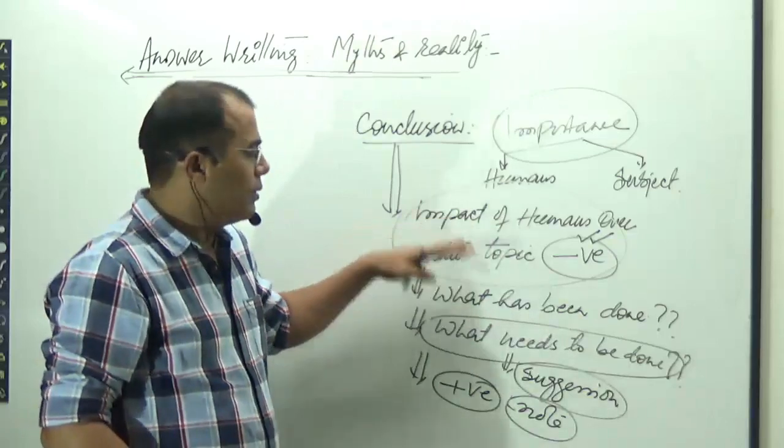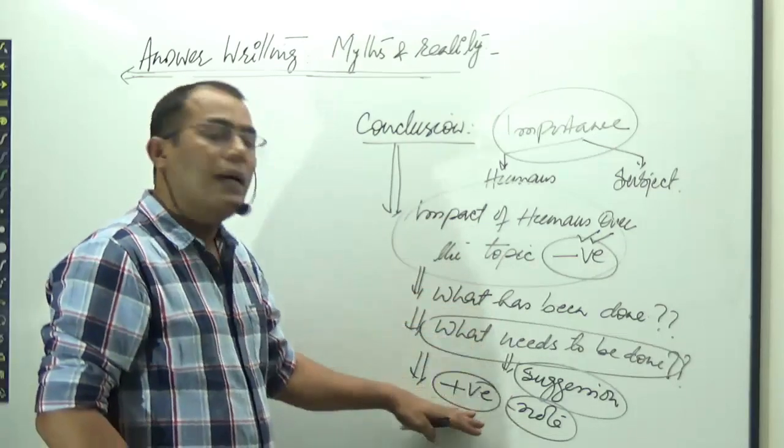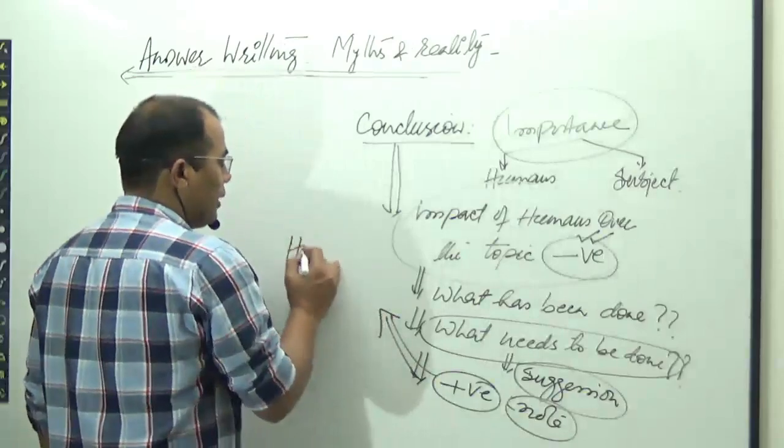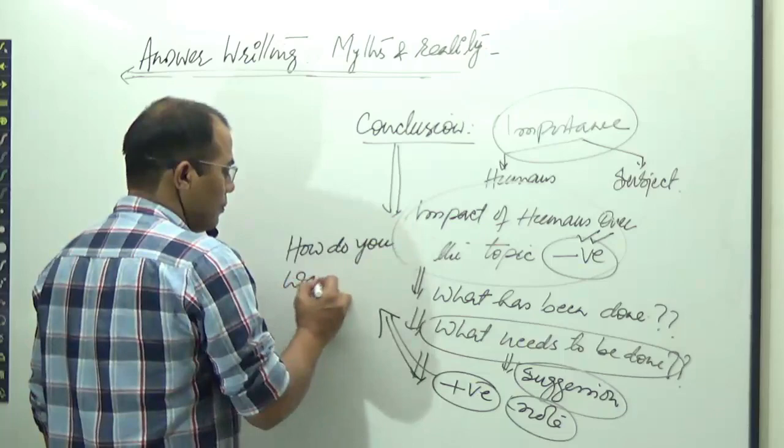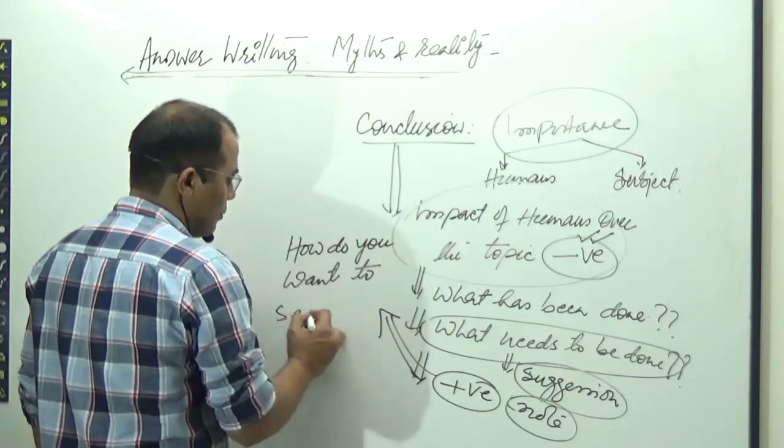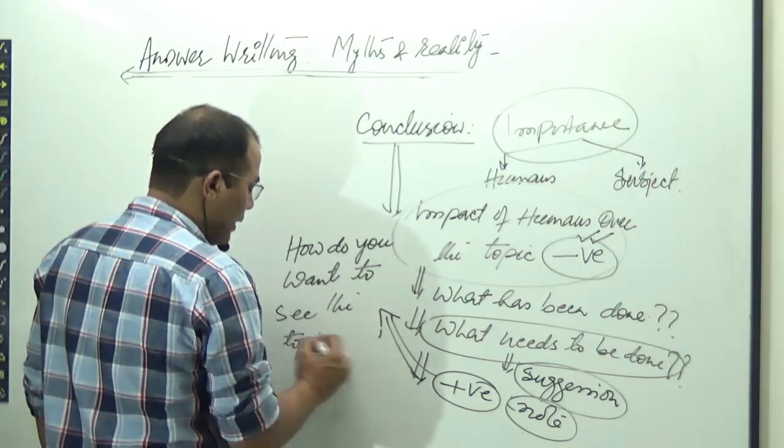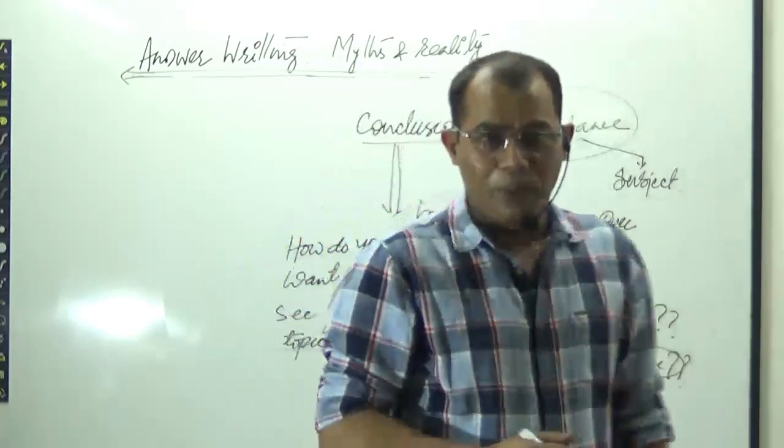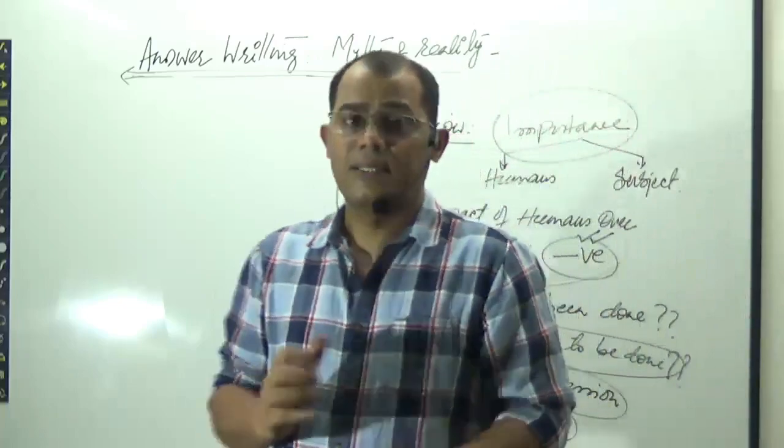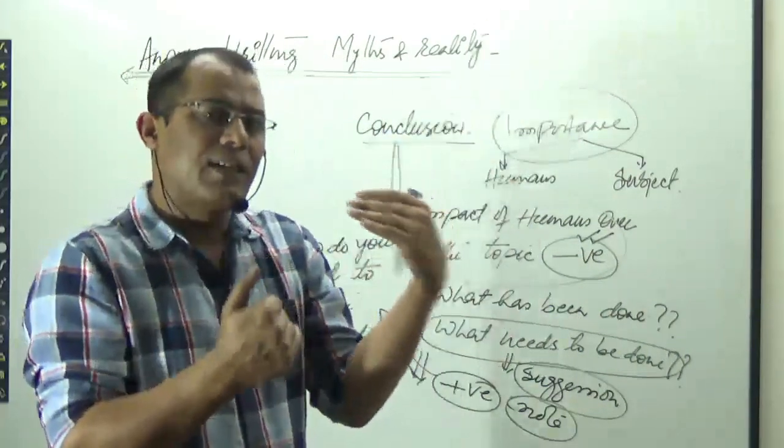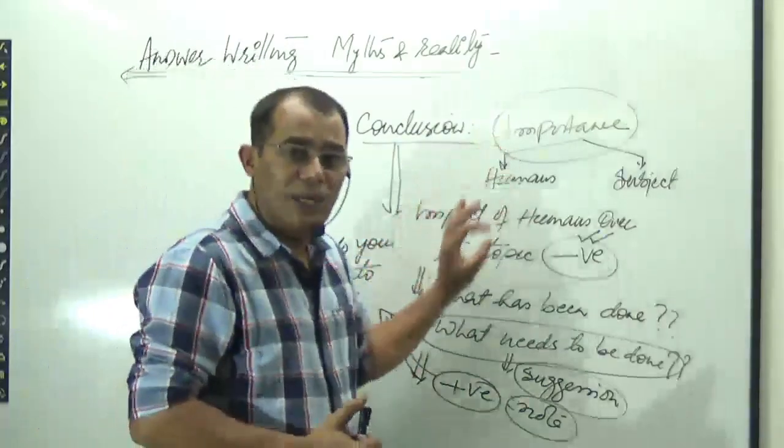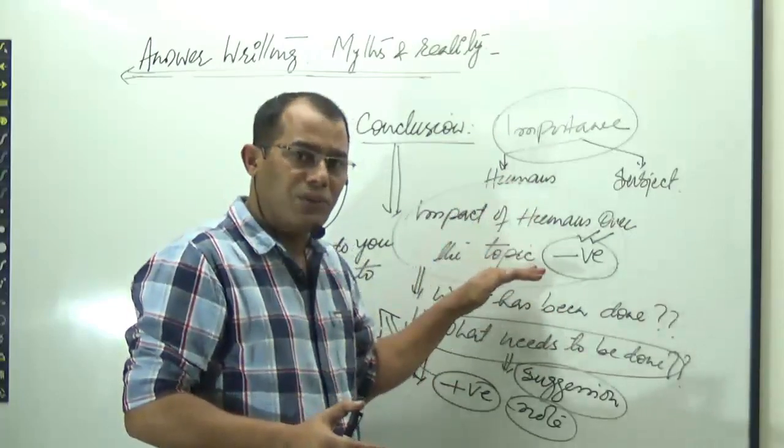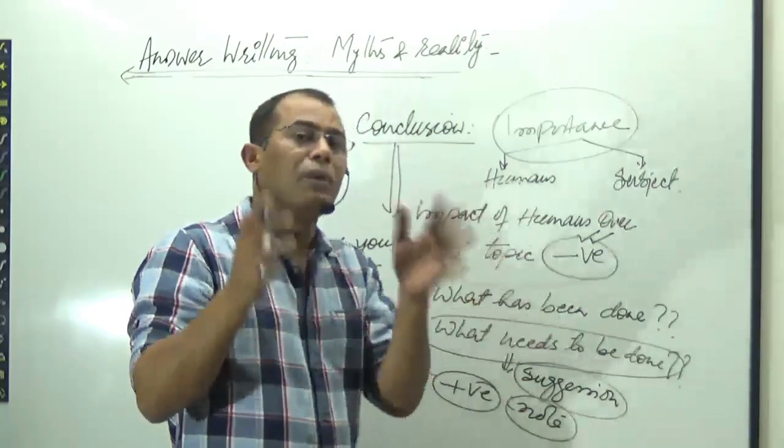So, there are four parts. Highlight the negative impact of humans, what has been done, what needs to be done, and then the ending with a positive note about, basically, here, you talk about how do you want to see the topic in the future. What is one thing you would like to bring change in that particular topic? And that will be the greatest creativity. Now, you might find it very difficult right now, how can you write so many things in the concluding remarks? That is what you have to learn. So, how can you conclude in 15 words, 20 words at the most? And you can give all these things. That is where you need to practice a lot.